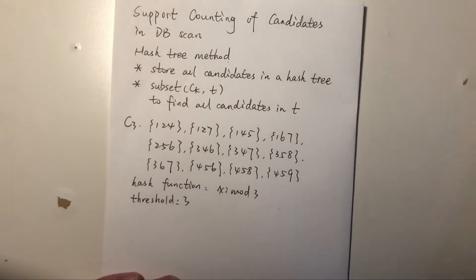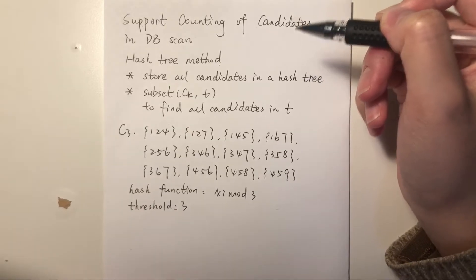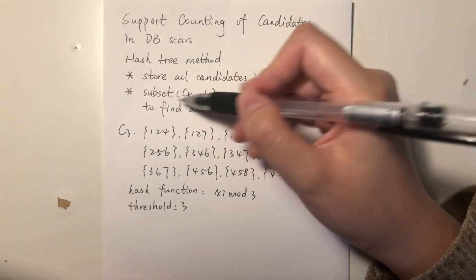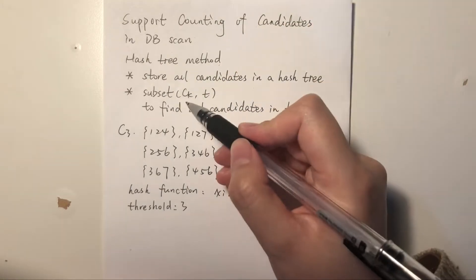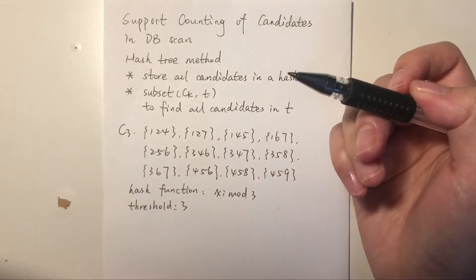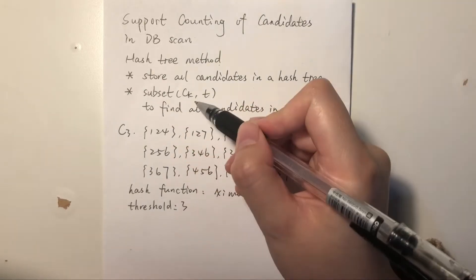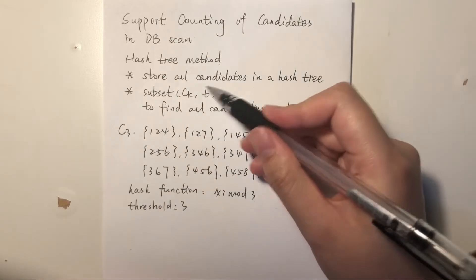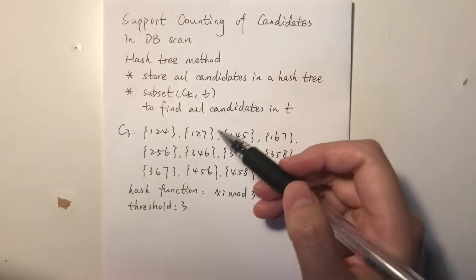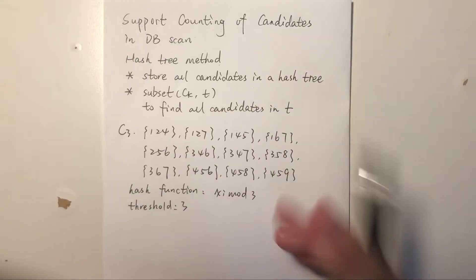So now let's get into it. For this hash tree method, there are two main steps. The first step is to store all candidates in a hash tree, and the second step is to use a subset function which takes two parameters: the first parameter is all candidates in the hash tree format, and the second parameter is one transaction. We use this subset function to find all candidates in a transaction, and by scanning the database once — scanning every transaction — we can get the support count of all candidates.